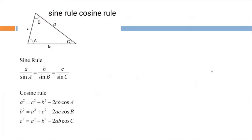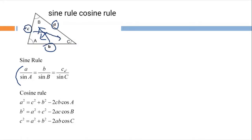The next important rule is the sin rule. The sin rule states that the ratio of a side to the sine of its opposite angle is constant for any triangle. So: a divided by sin A equals b divided by sin B equals c divided by sin C. Here, A, B, C are the sides of the triangle, and sin A, sin B, sin C are the sines of the opposite angles to those sides.